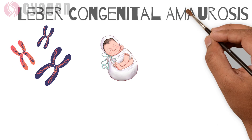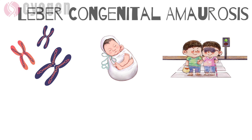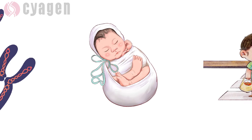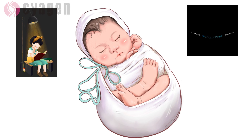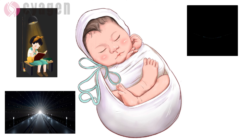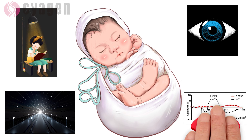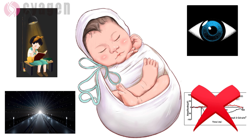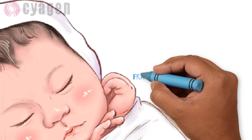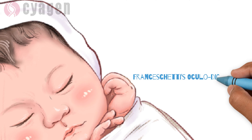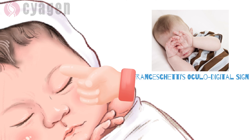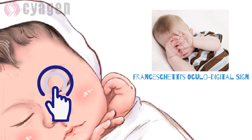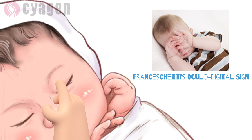Symptoms of LCA appear within the first years of life, often resulting in significant vision loss and potential blindness. Symptoms include night blindness, rapid involuntary eye movement, poor and declining peripheral vision (tunnel vision), and no measurable electroretinogram activity due to loss of photoreceptor cells. A specific behavior called Franceschetti's oculodigital sign is characteristic of LCA, consisting of poking, pressing, and rubbing the eyes with a knuckle or finger.